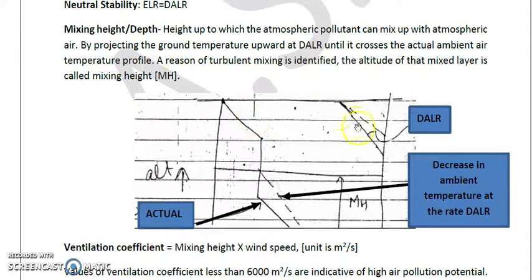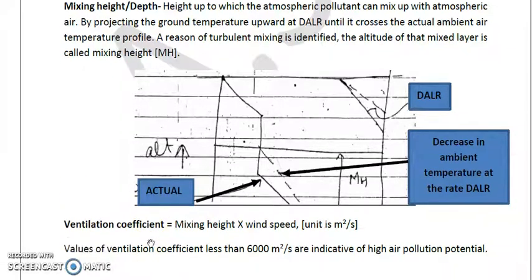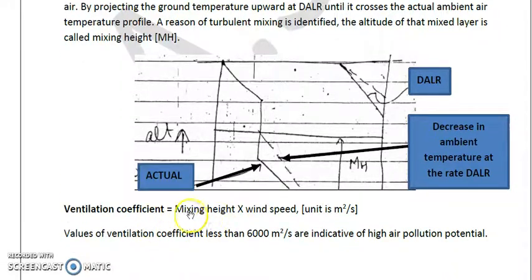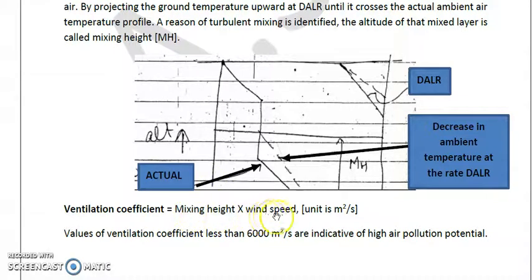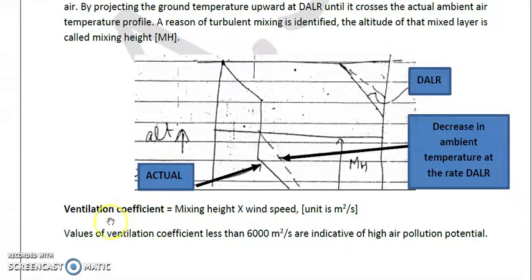Now comes an important term: the ventilation coefficient. The ventilation coefficient is a parameter used to assess the pollution load of an area, taking into account both the mixing height and the mean wind speed. Ventilation coefficient equals mixing height (in meters) multiplied by wind speed (in meters per second), giving units of square meters per second.